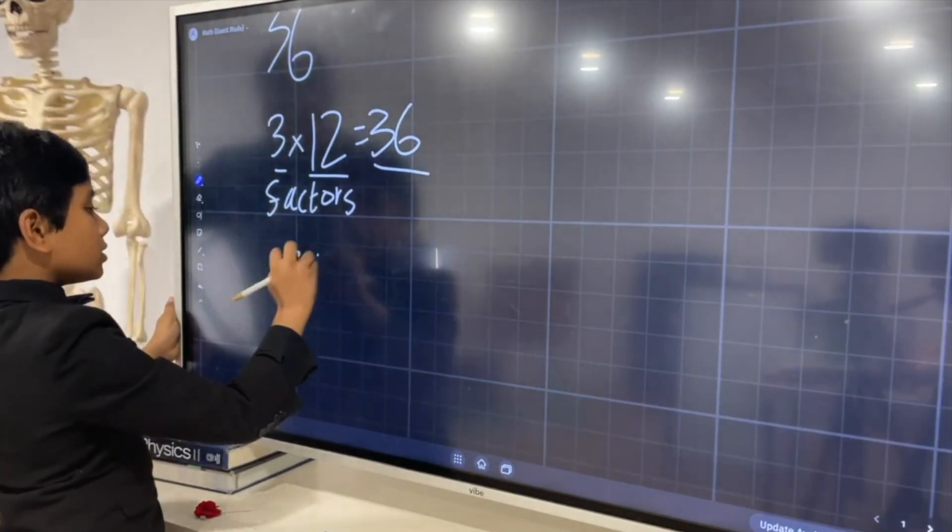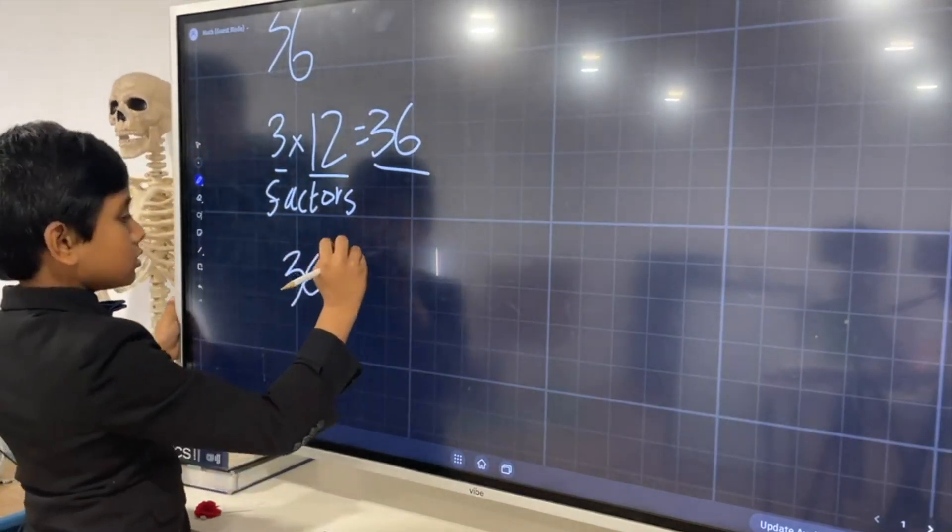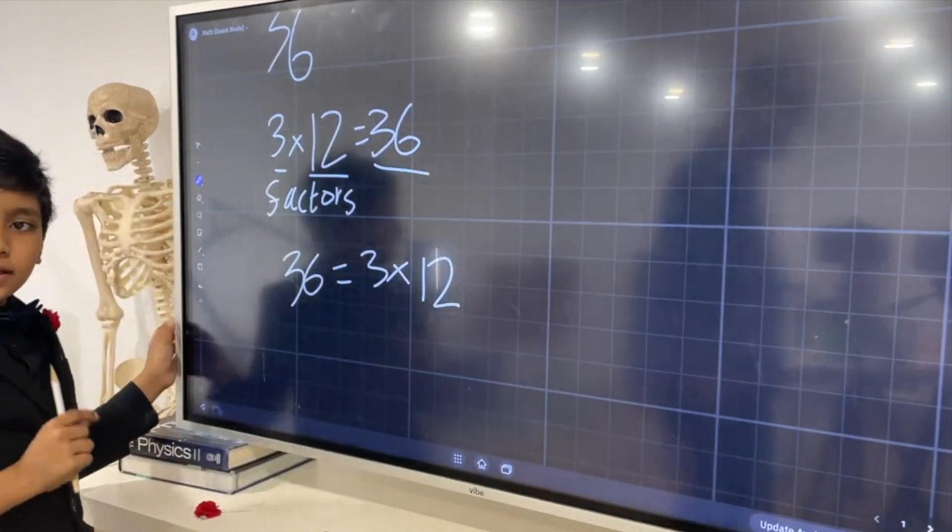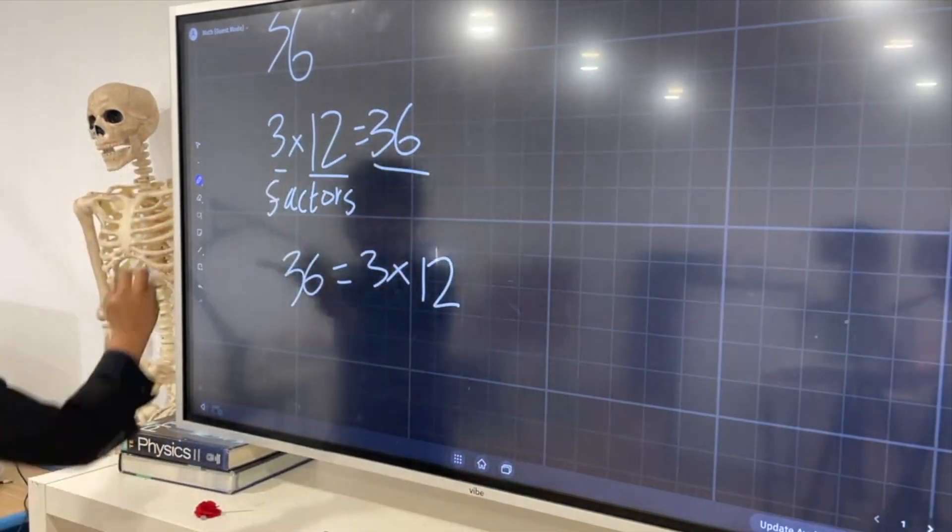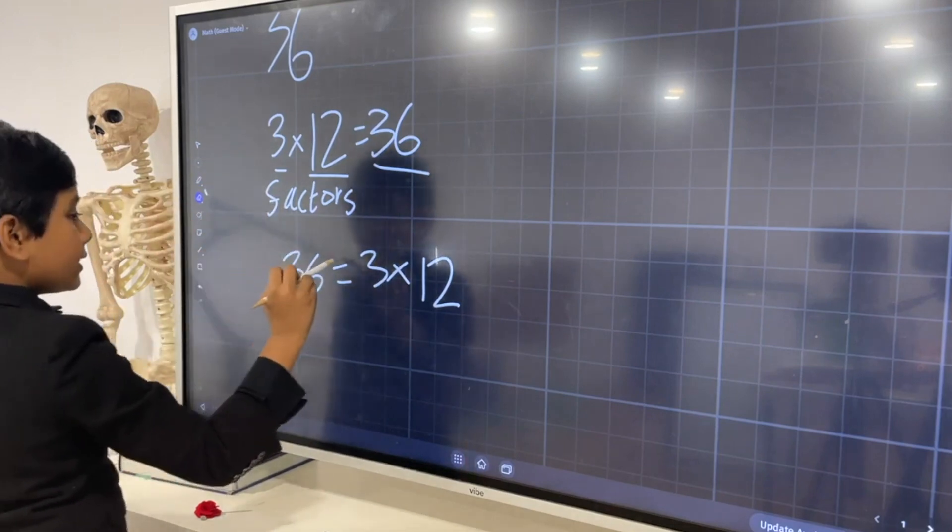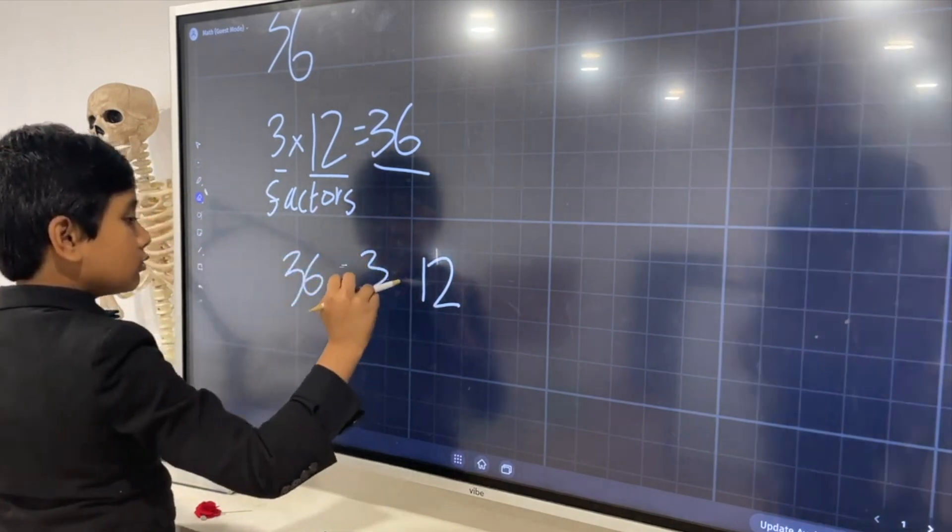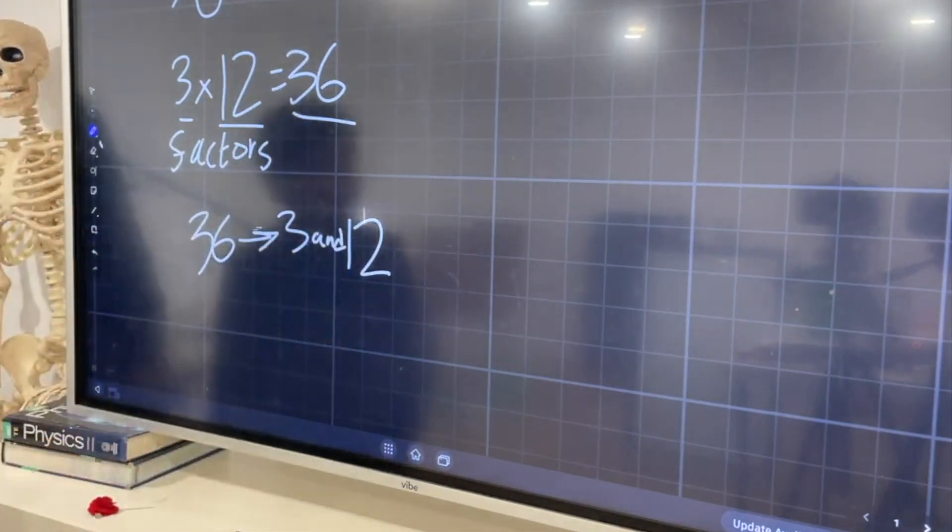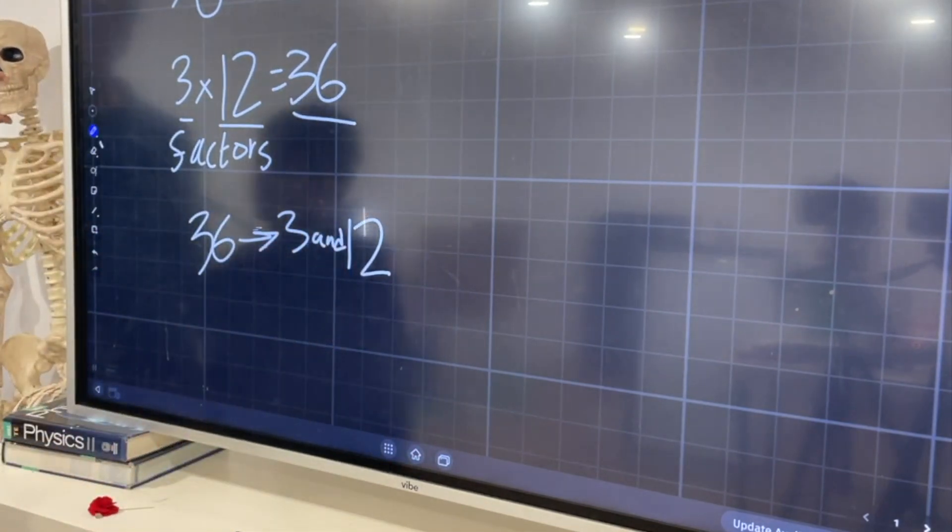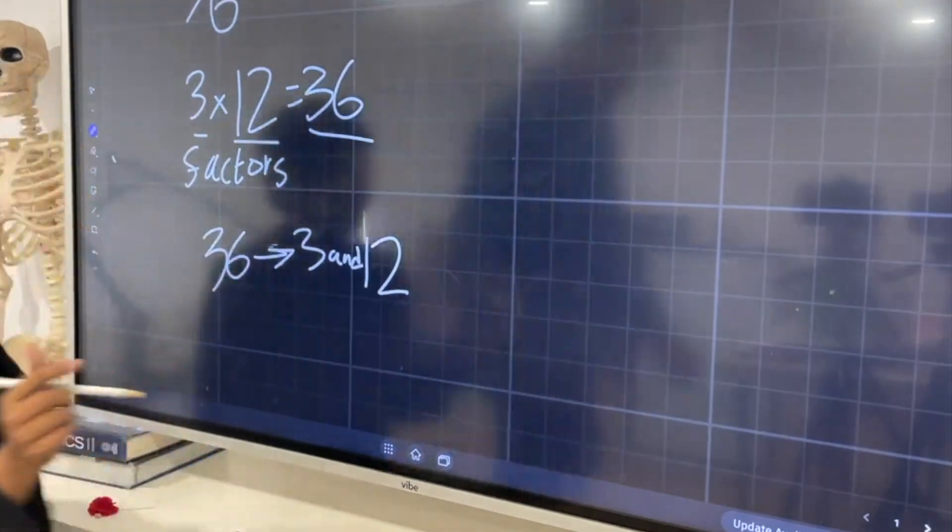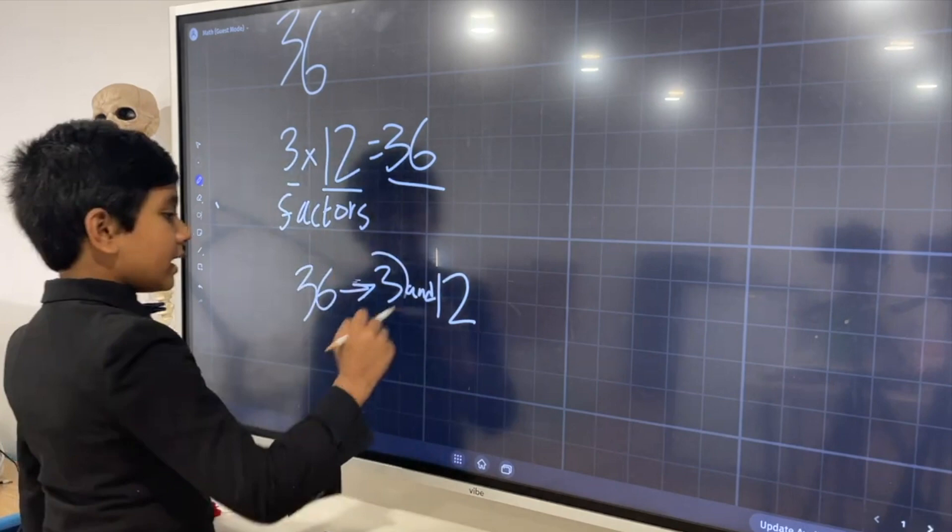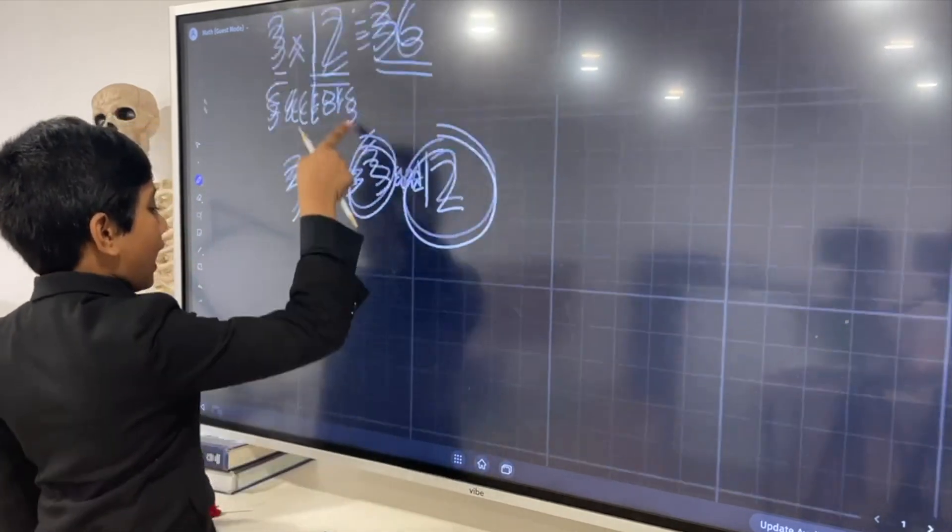However, let's put that in reverse. And now, we have 36 is 3 times 12. Now, let's make this equal sign into an arrow sign, and this multiplication sign into an 'and'. Now do you see it? 36 can be created by multiplying 3 and 12. 3 and 12 are thus known as factors.